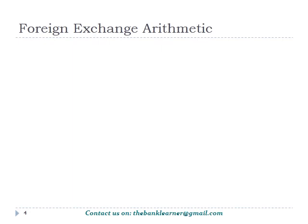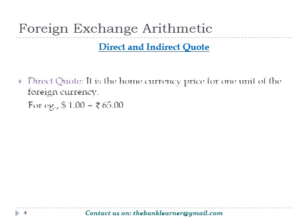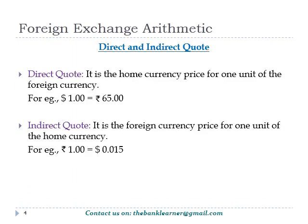Now, let's see how an exchange deal is being quoted. There are two ways to quote: direct quote and indirect quote. In direct quote, the quote is made in terms of home currency — that is, how much home currency is required for one unit of foreign currency. For instance, for an Indian, 65 units of home currency is required for one unit of the American dollar.